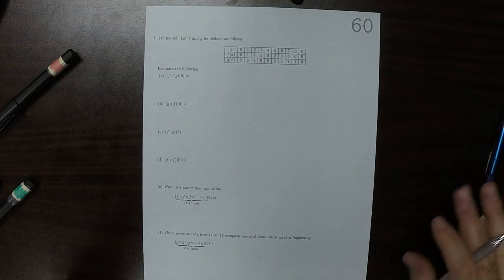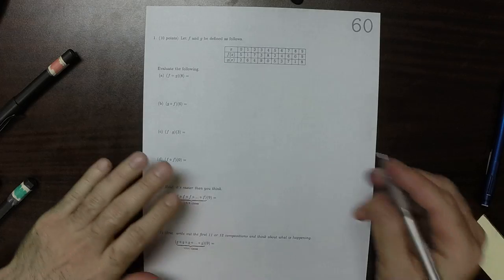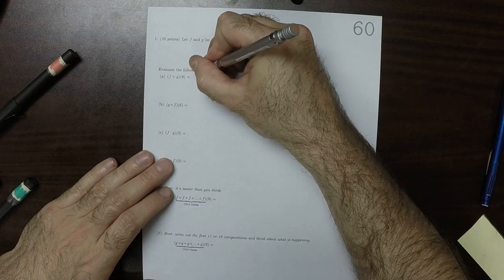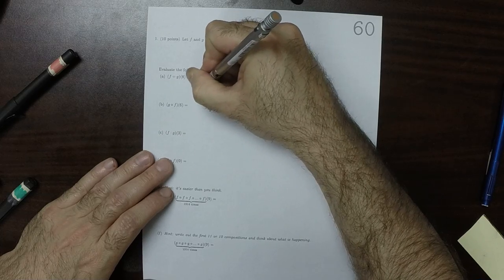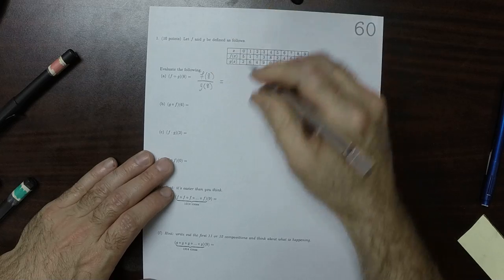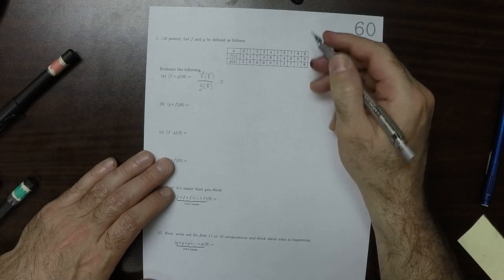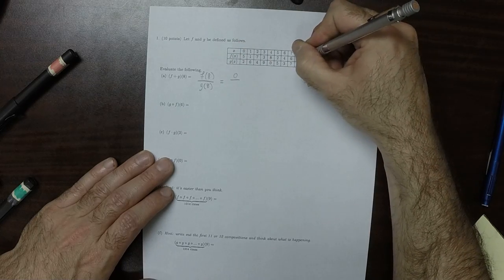This is the solution to written homework 60. Part a, according to the definition, this is f divided by g that can be obtained by two lookups. So f of 8 is 0 and g of 8 is 1, so the answer is 0.